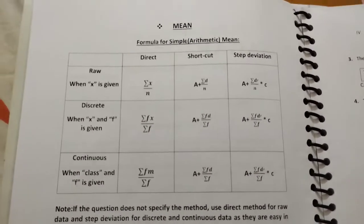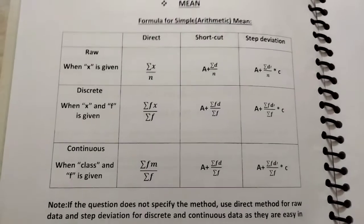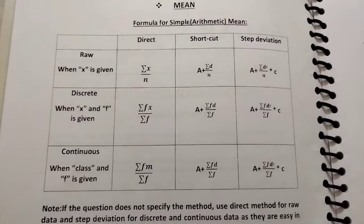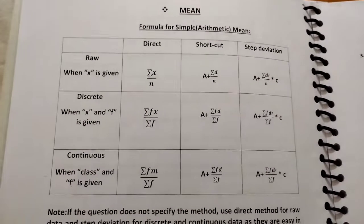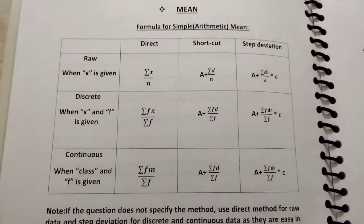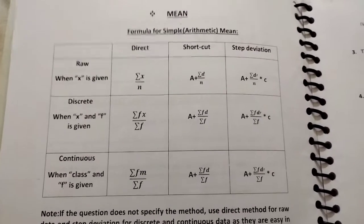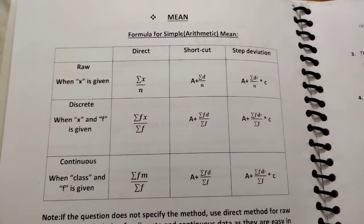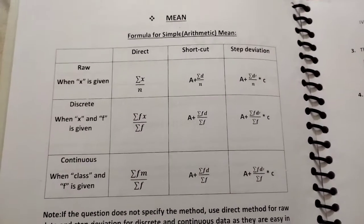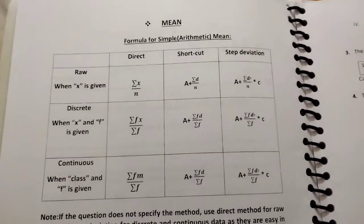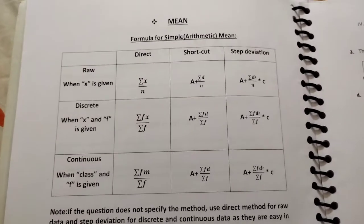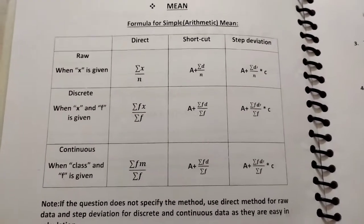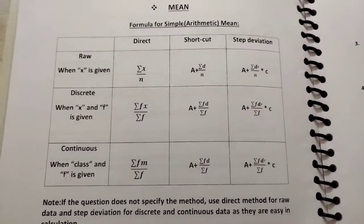When raw data is given and we use the direct method, we use the formula Sigma X upon n. When we use the assumed mean method or shortcut method, we use the formula A plus Sigma D upon n. And if we use the step deviation method, we use the formula A plus Sigma D dash upon n, multiplied by C.